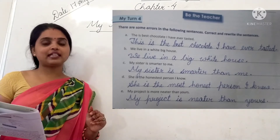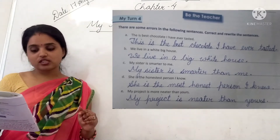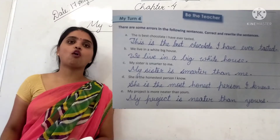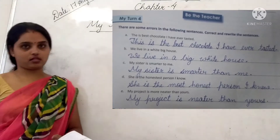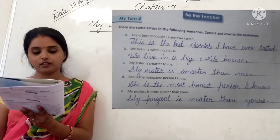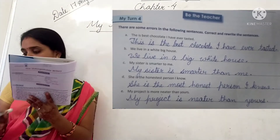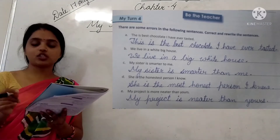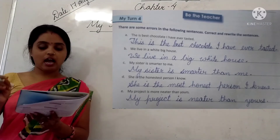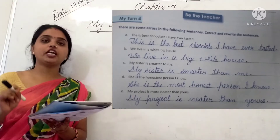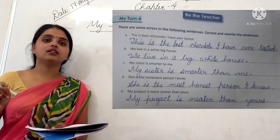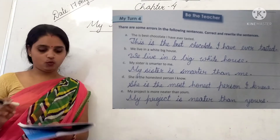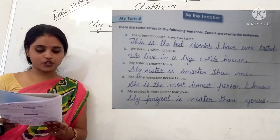Next, question number four: 'She is the honestest person I know.' There is a mistake in the spelling and form of 'honestest.' So what we will write is: 'She is the most honest person I know.'